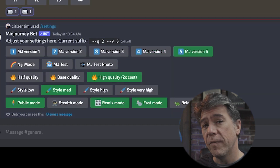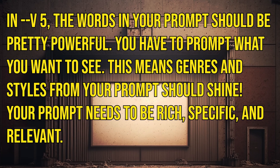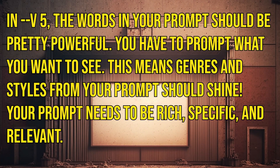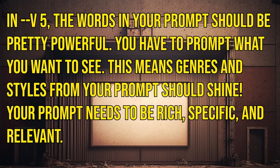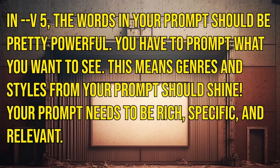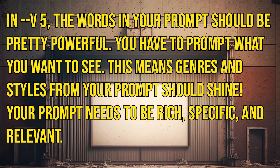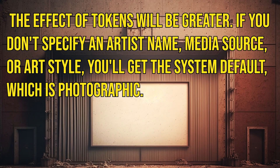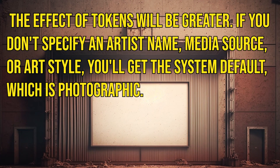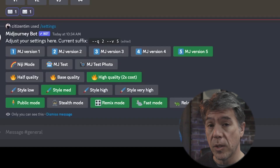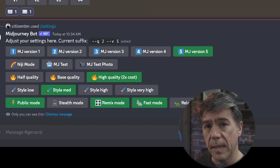As far as prompting in V5, Mid-Journey has said: in V5, the words in your prompt should be pretty powerful. You have to prompt what you want to see. This means genres and styles from your prompt should shine. Your prompt needs to be rich, specific, and relevant. The effect of the tokens will be greater. If you don't specify an artist's name, media source, or art style, you'll get the system default, which is photographic. So let's take a look at some examples here.